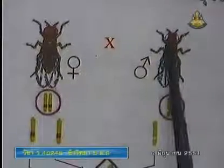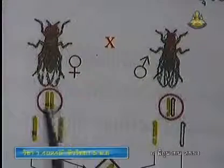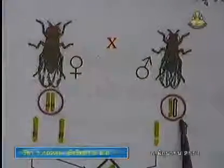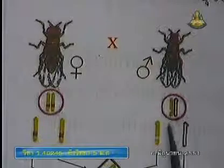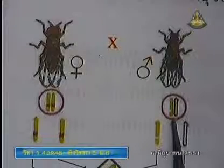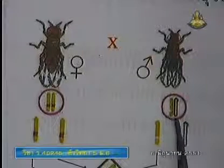มะแรงวีเพธมีตาสีแดง มะแรงวีเพธผู้ตาสีขาว นี่เป็น Genotype เฉพาะลักษณะนี้นะคะ เกี่ยวกับสีตา มะแรงวีเพธมีตาสีแดง ที่โครโมโซม X มี X ทั้งคู่มีตาสีแดง แล้วก็สำหรับมะแรงวีเพธผู้ตาสีขาว ที่โครโมโซม X เป็นสีขาว